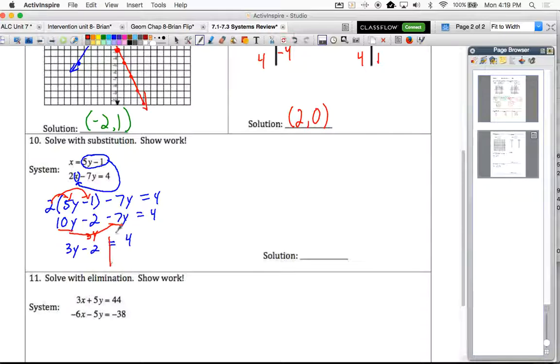All right, now we've gotten to our SADMEP solving step. We're going to undo the operations to get y by itself. So we're going to undo the minus 2 by adding 2. 3y equals 6. And then we'll undo multiplication by dividing. And then we find that y is equal to 2.